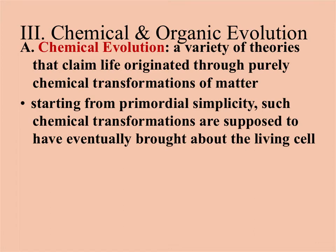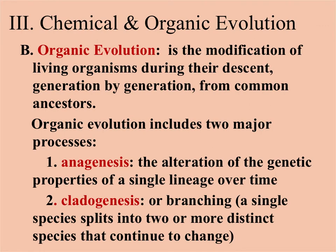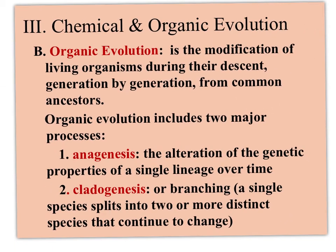Chemical evolution is similar to spontaneous generation and abiogenesis. It is a set of theories saying that life originated through chemical transformations of matter, starting as a single cell and eventually becoming more complex — multicellular organisms and the many species we see today. Organic evolution refers to how living things change over time, how they are modified, and how descendants differ from their common ancestors.